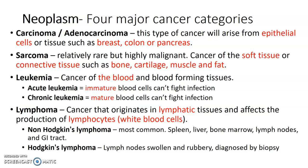Leukemia is cancer of the blood. Acute leukemia has immature blood cells that can't fight infection, and chronic leukemia has mature blood cells. Lymphoma originates in the lymphatic tissues and affects the production of lymphocytes, which are your white blood cells. There are two different types — Non-Hodgkin's lymphoma is the most common, affecting the spleen, liver, bone marrow, lymph nodes, and GI tract.